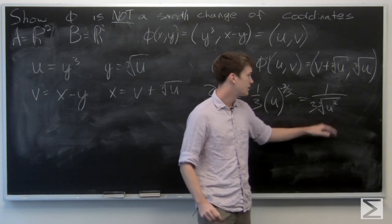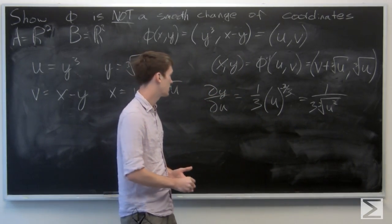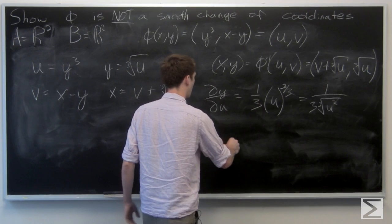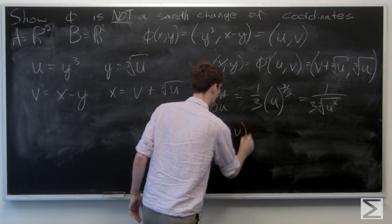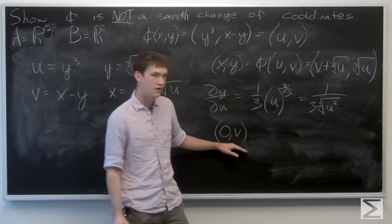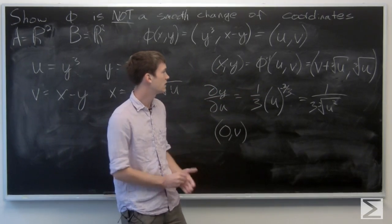So any time that u is 0, we know that the derivative doesn't exist. For all points (0,v), our derivative doesn't exist.